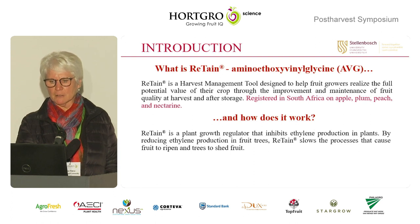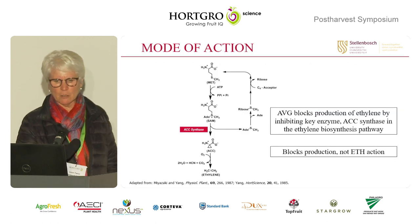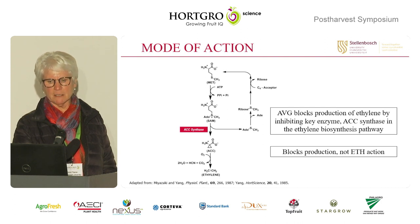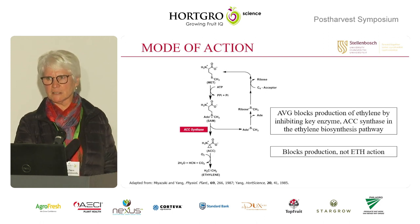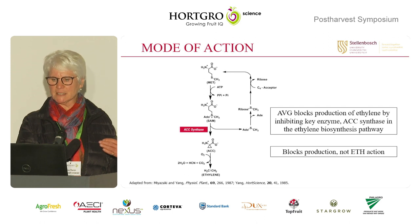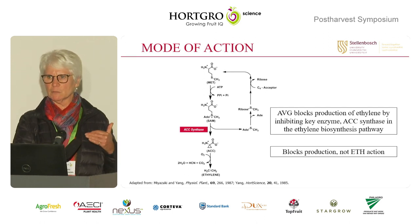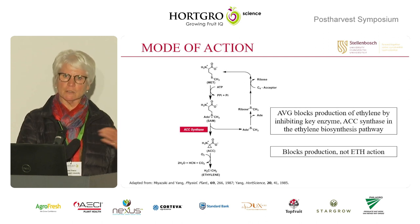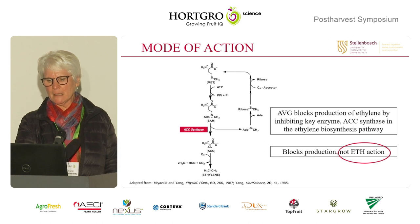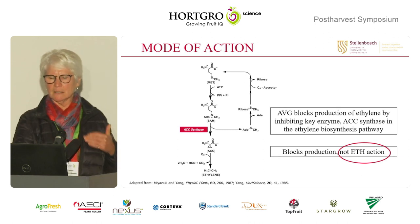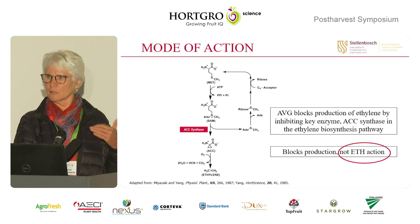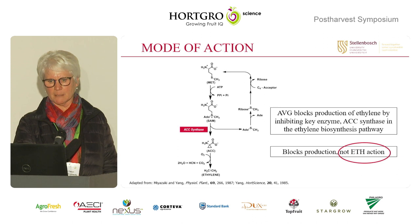Retain is registered in South Africa on apple, plum, peach, and nectarine. It blocks ACC synthase, which inhibits the production of ethylene. This is different from Harvester's mechanism, which blocks the ethylene receptor. So it does not prevent the action of ethylene — it blocks the production. Once ethylene is already there, you're not going to get any response by applying Retain. That's when Harvester comes into play.